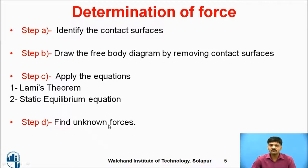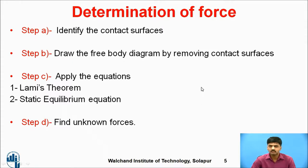For the sign conventions: all vertical upward forces are positive, right-hand side forces are positive, clockwise rotary effect is positive, anti-clockwise rotary effect is negative, left-hand side forces are negative, and all downward forces are negative.